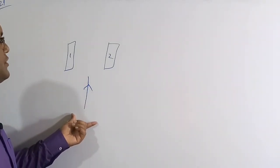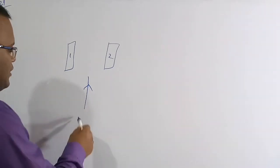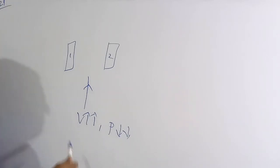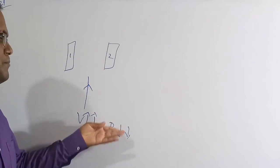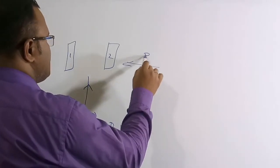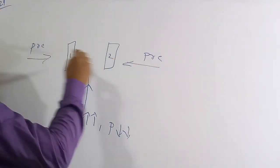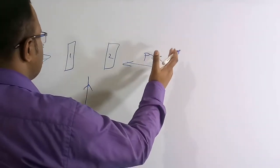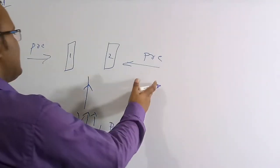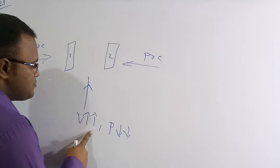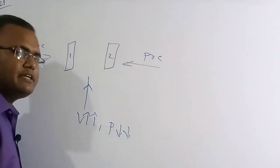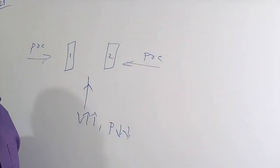When air is blown between the two papers at high speed, the velocity of the wind is very high, so the pressure of the wind between the papers is very low. The outside pressure is much higher by comparison. Because of this higher outside pressure, the two papers are pushed closer to each other. Pressure and velocity are inversely proportional.